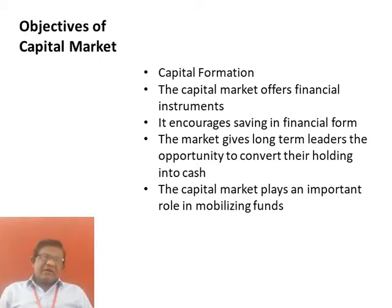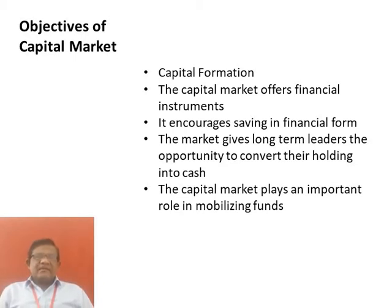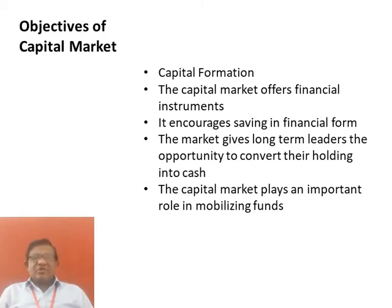We are now discussing the objectives of the capital market one by one. Number one is capital formation. By channeling savings and making them available to companies and public authorities that need them, the capital market offers access to a variety of financial instruments that enable economic agents to price and exchange risk. It encourages savings and financial reform through assets with attractive yields, liquidity and risk characteristics. Through the stock exchange, the market gives long-term lenders the opportunity to convert their holdings into cash. It also offers companies which have securities the opportunity to obtain cash without reducing their liquidity.